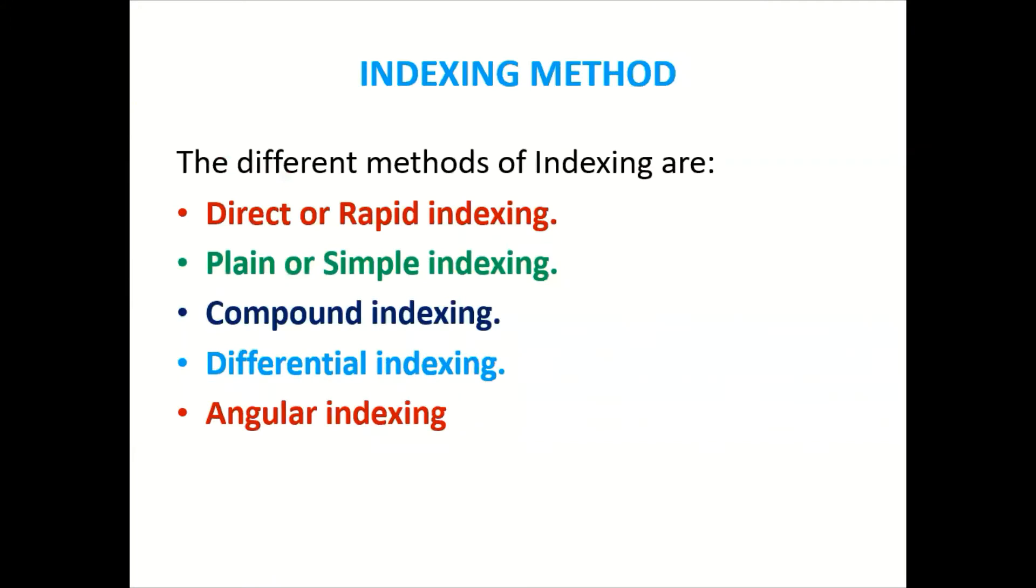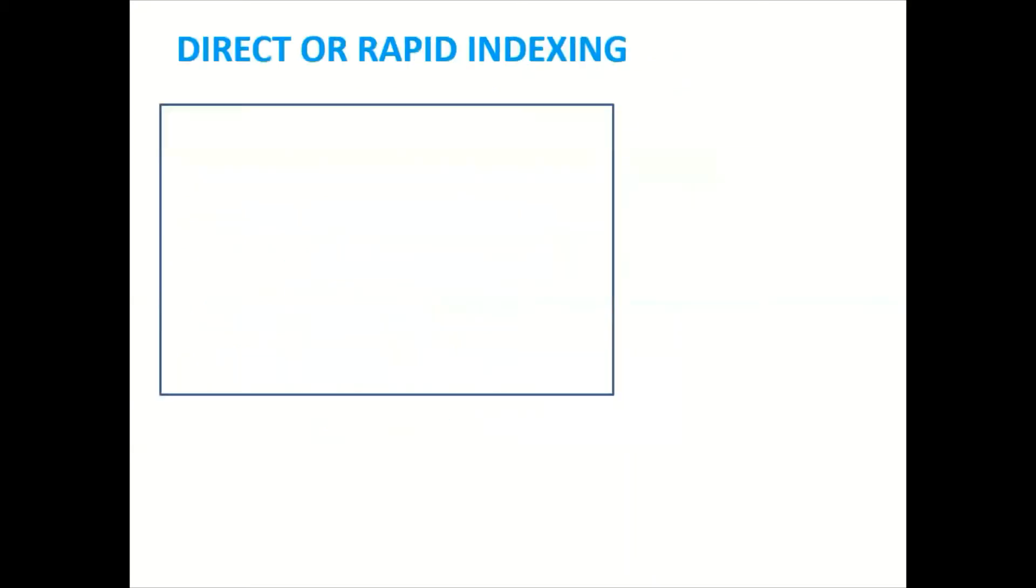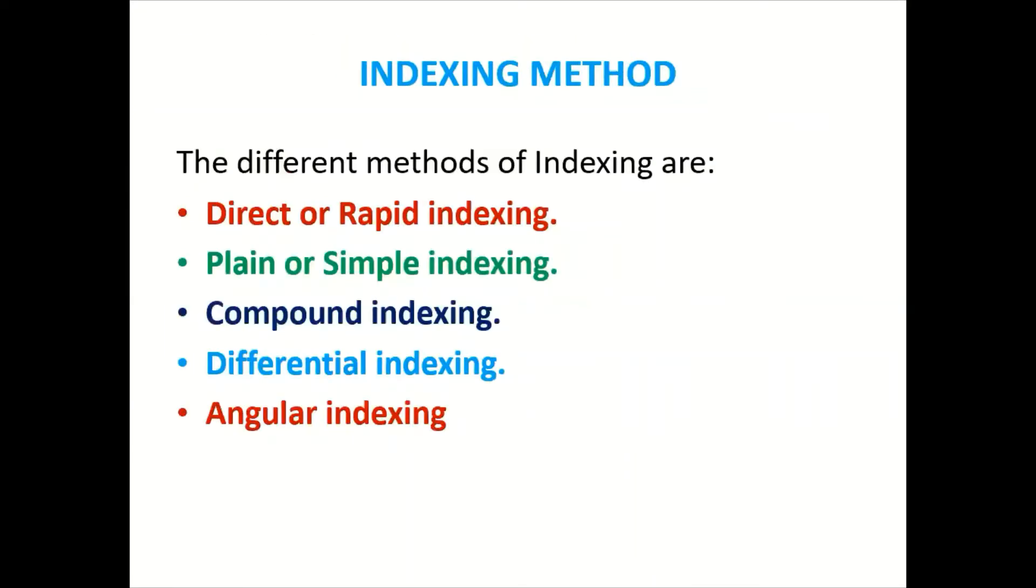There are different methods of indexing. First one is the direct or rapid indexing, plain or simple indexing. So today we will cover only two methods. Other methods include compound indexing, differential indexing and angular indexing.